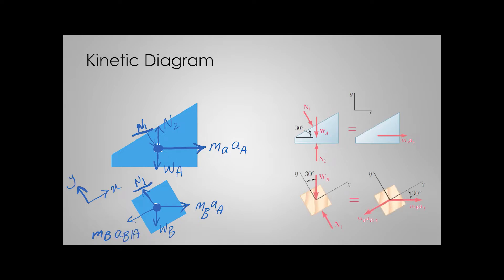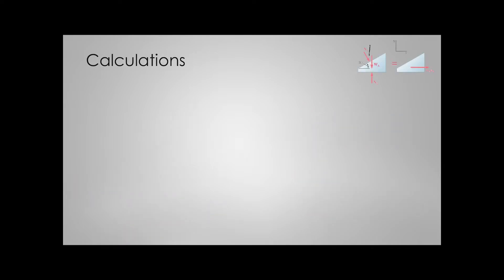Now we know the directions, forces, kinetics, and kinematics. Let's use Newton's second law to find the accelerations. For body A, since it is only moving on a horizontal surface, it has acceleration only in the horizontal direction. So we can apply Newton's second law only in the x direction, giving us mass of A times its acceleration. The only force pushing the body left or right is the normal force exerted on it, which needs to be resolved into components.